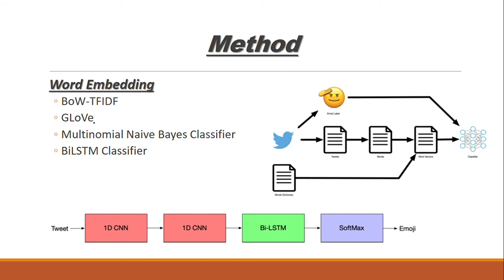The second method is GloVe, which was used for deep learning and SVM methods. GloVe is a pre-trained unsupervised model, and it was tested whether adding global statistics to the Twitter corpus would help neural performance. The third method is the Naive Bayes classifier. The full pipeline is shown here: from Twitter, data is collected containing tweets and their corresponding emoji labels. Using a word dictionary, text is transformed into word vectors in a bag-of-words with TF-IDF representation, and then a Multinomial Naive Bayes classifier is trained for text classification.